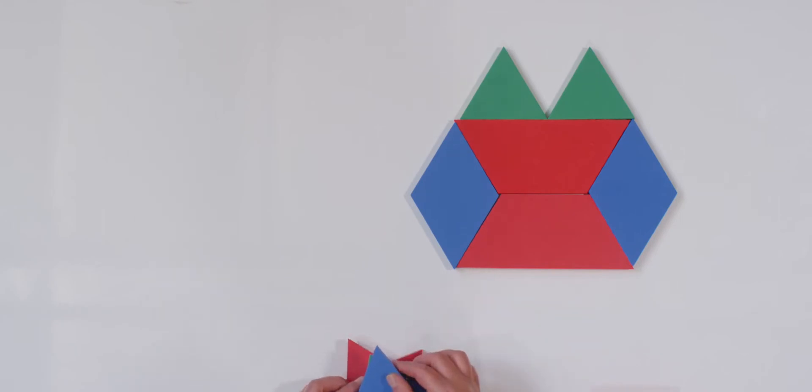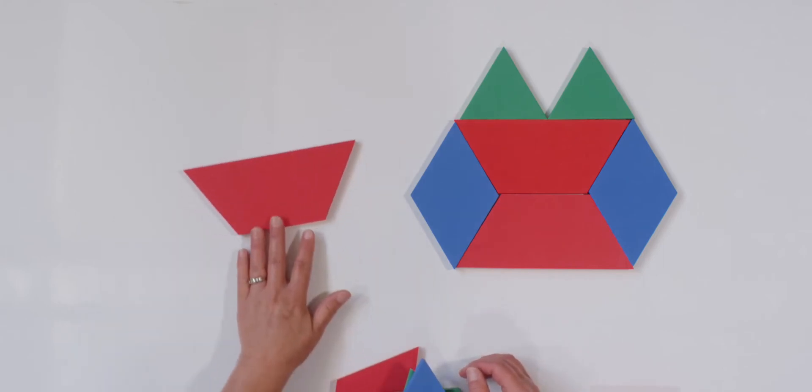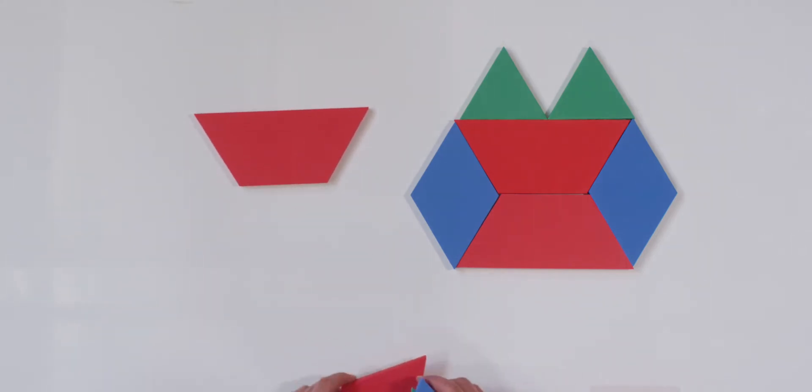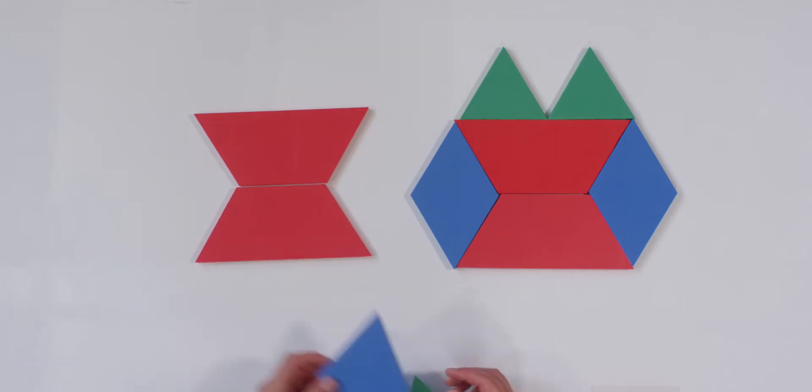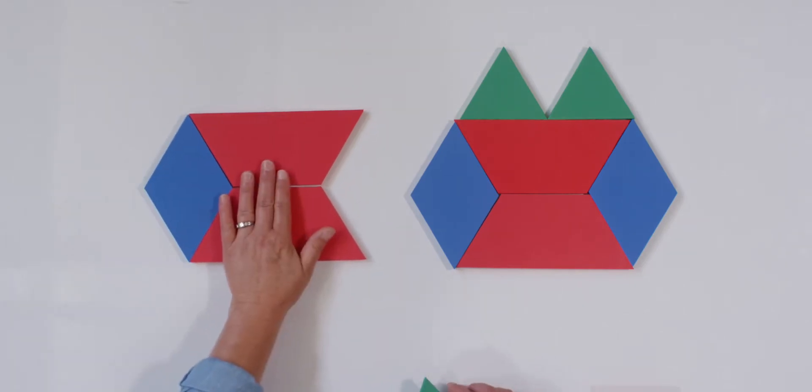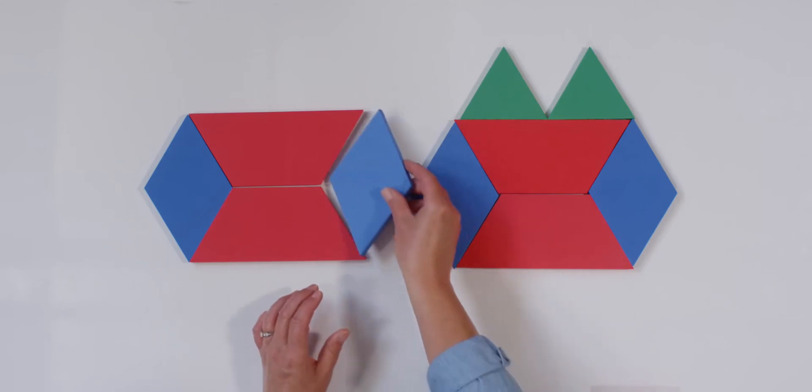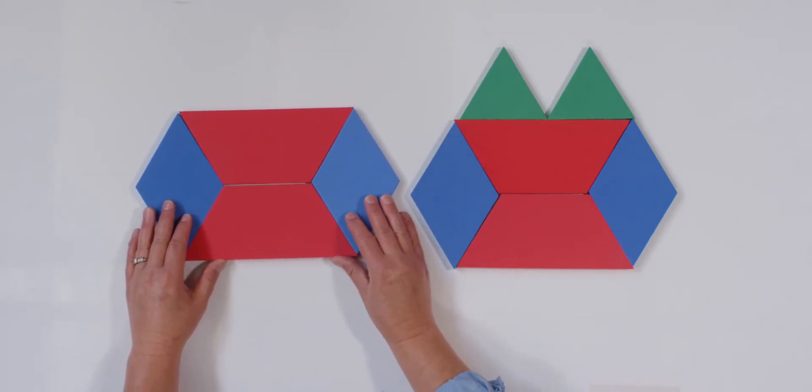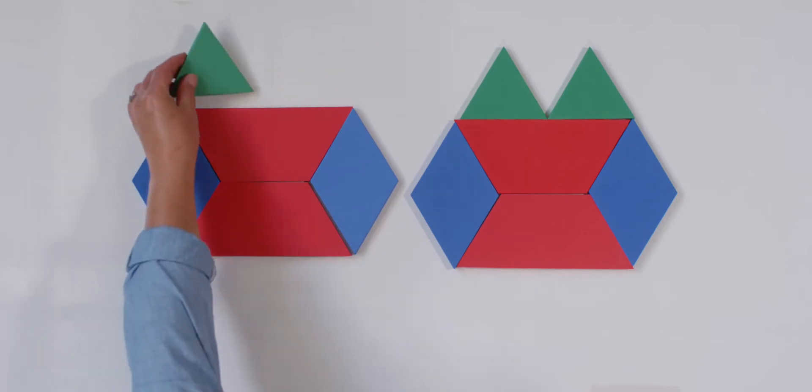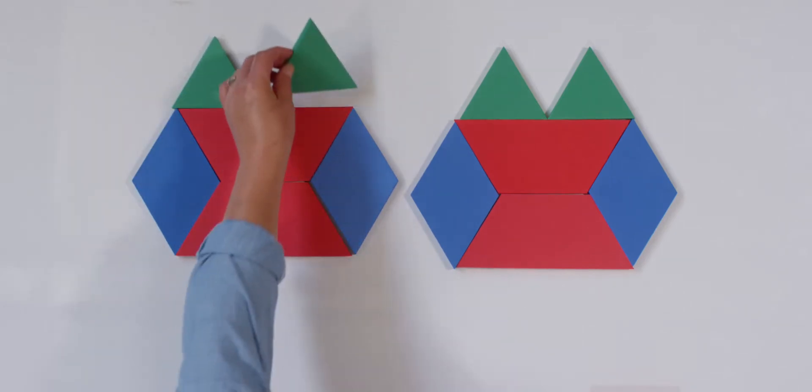You make yours at home while I make mine with you. I'm going to start with my red pattern block. I want to make them identical to each other. Add my blue pattern block. Oh, that's too squishy. Let's slide it over. And then I will add my green pattern blocks at the top.